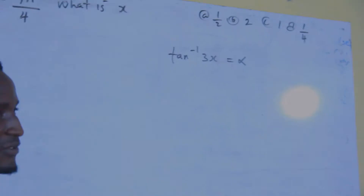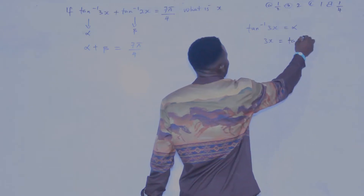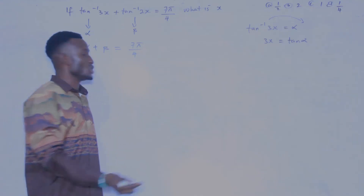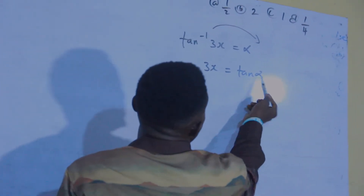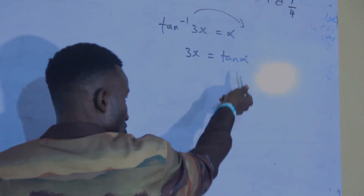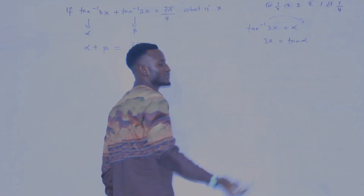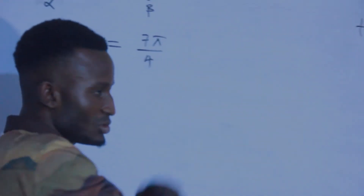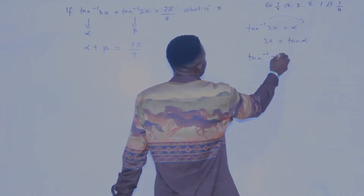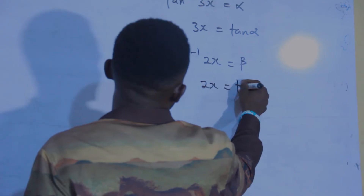Now everybody, believe with me that if tan inverse of 3x is equal to alpha, that shows that 3x is equal to tan alpha. It's obvious — if you have tan theta equals 3x and you want to make theta the subject of the formula, that will be theta equals tan inverse of 3x. Similarly, if tan inverse of 2x equals beta, then 2x equals tan beta.